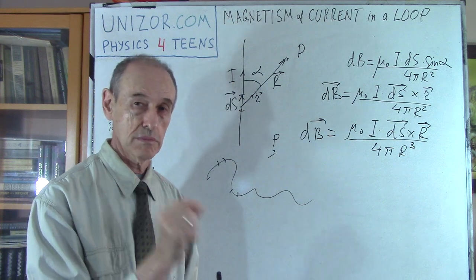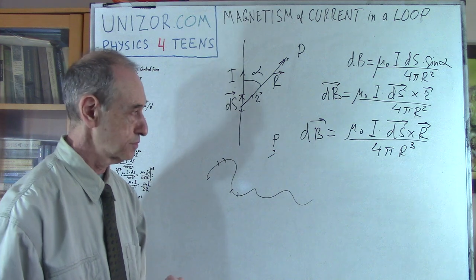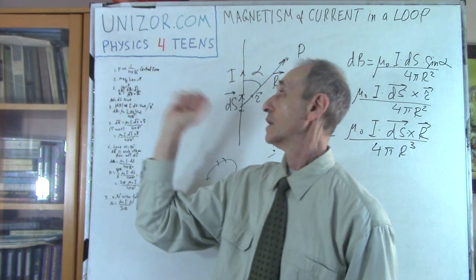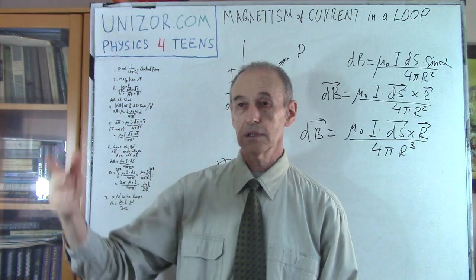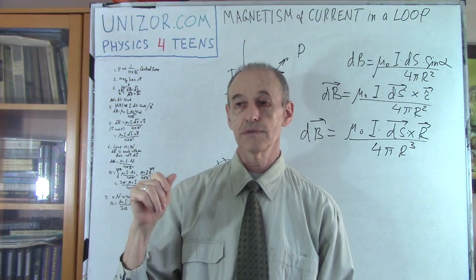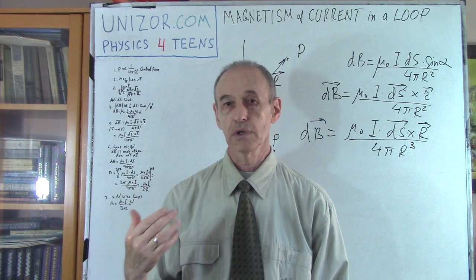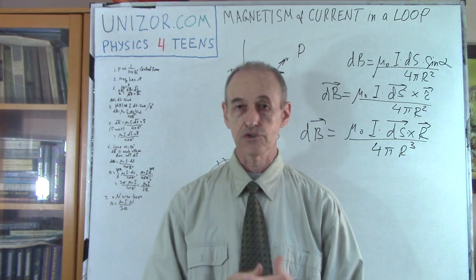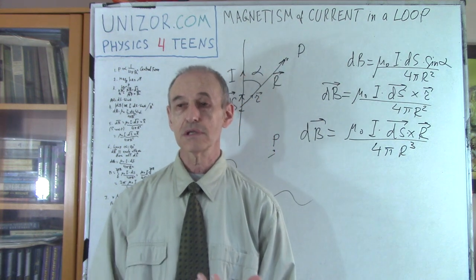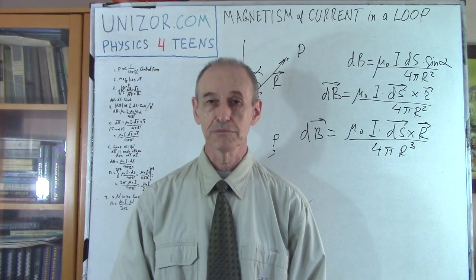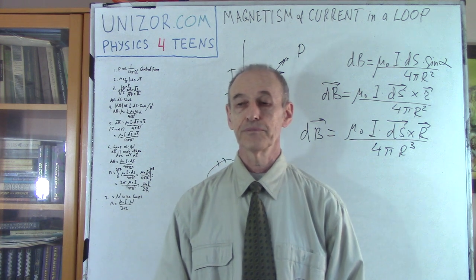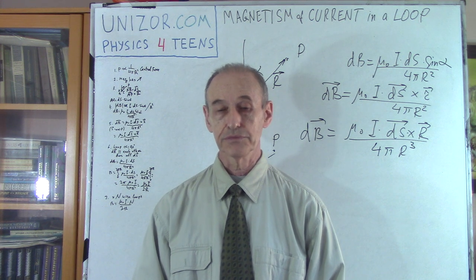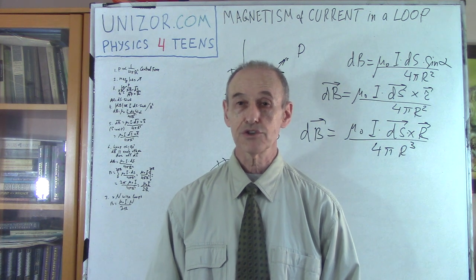I suggest you go to Unizor.com. If you choose the Physics 14 course, go to Electromagnetism, then Magnetism of Electric Current, and you'll find the lecture 'Current in the Loop' with both the video and a textual representation. I do recommend taking the whole Physics for Teens course. That's it for today — thank you very much and good luck.